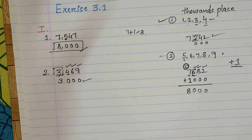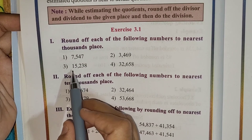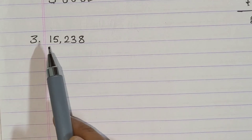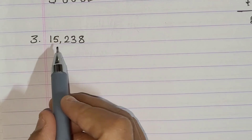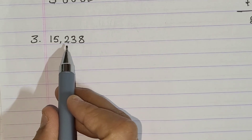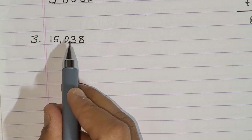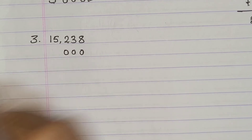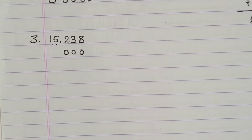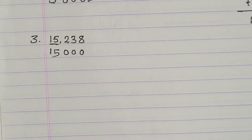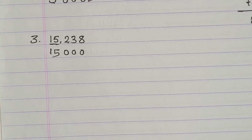Let's take one more example — the third one: fifteen thousand two hundred and thirty-eight. We check the digit at the hundred place, which is two. Since two falls in the first case (one, two, three, or four), we replace unit, ten, and hundred by zero, zero, zero. We leave the thousands place unchanged. So the answer is fifteen thousand.